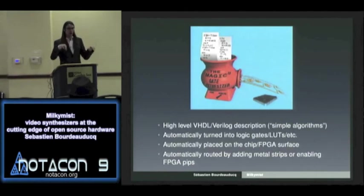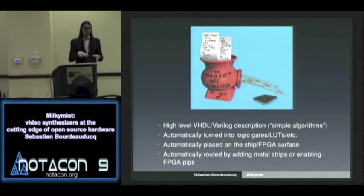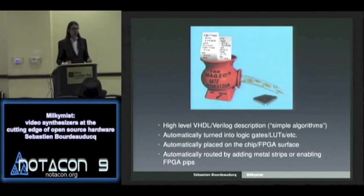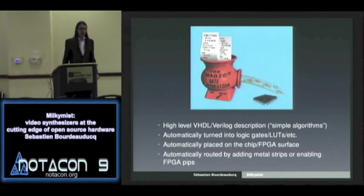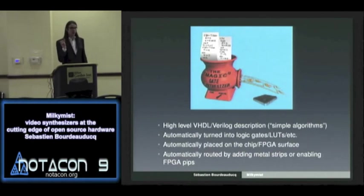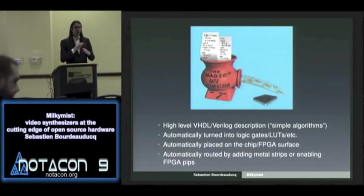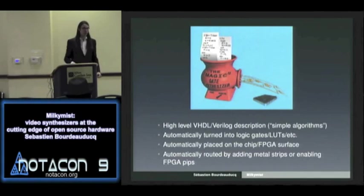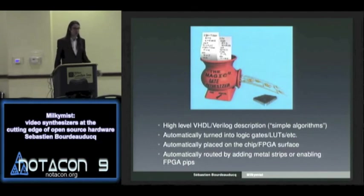Once you've placed your logic gates on the chip surface, you need to connect them together — this routing is also done automatically. On a chip, metal bonds connect all the pins. On an FPGA, signals are routed using PIPs — programmable interconnect points — which are small programmable switches inside the FPGA chip that connect pre-made wires together. It's like the old telephone network with operators connecting jacks to different lines. You enable switches in the FPGA and route signals through the pre-made lines.